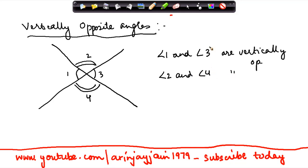Now, what do you mean by this? This means that each of these angles are opposite to each other in a vertical manner. Whenever this happens, whenever two lines intersect, the vertically opposite angles which are formed are equal.